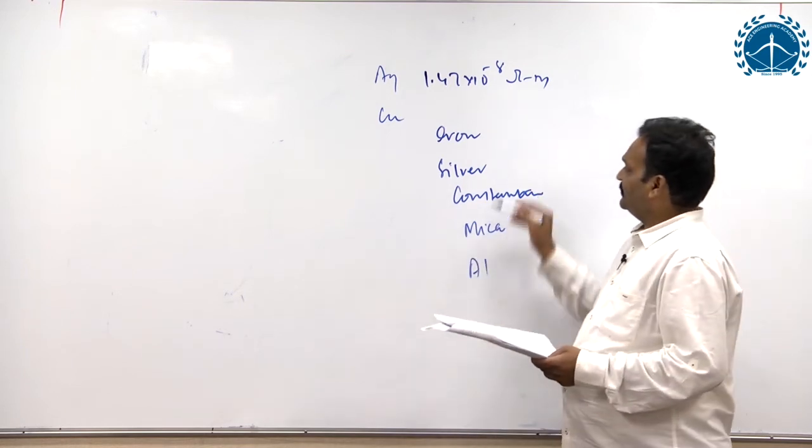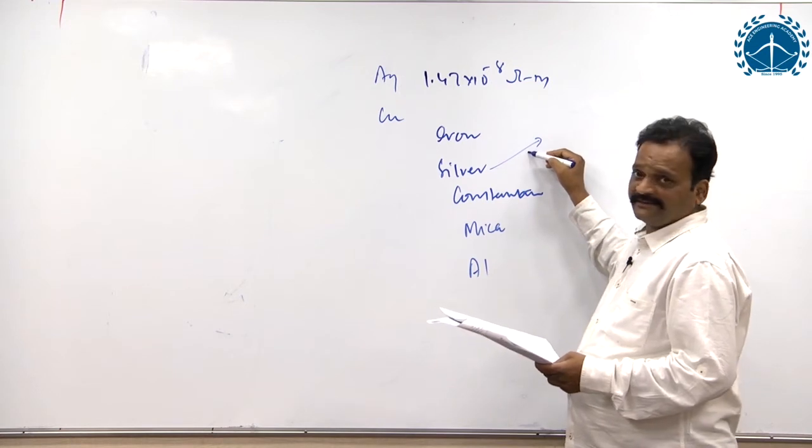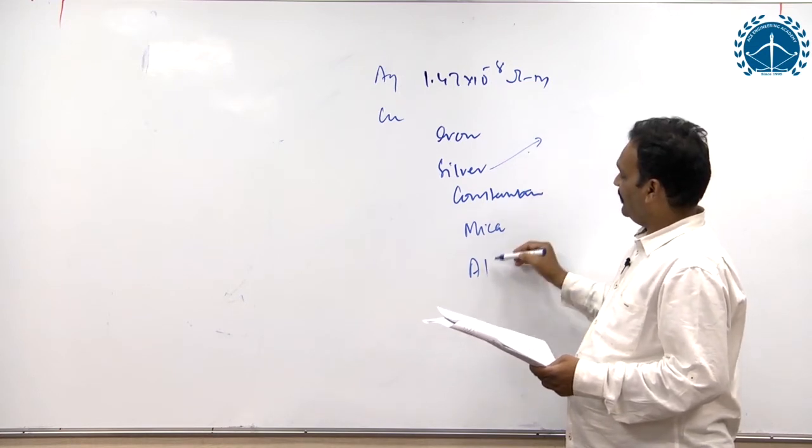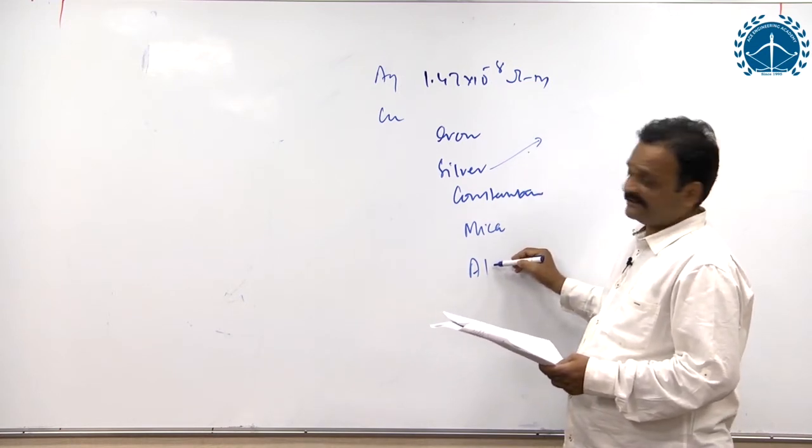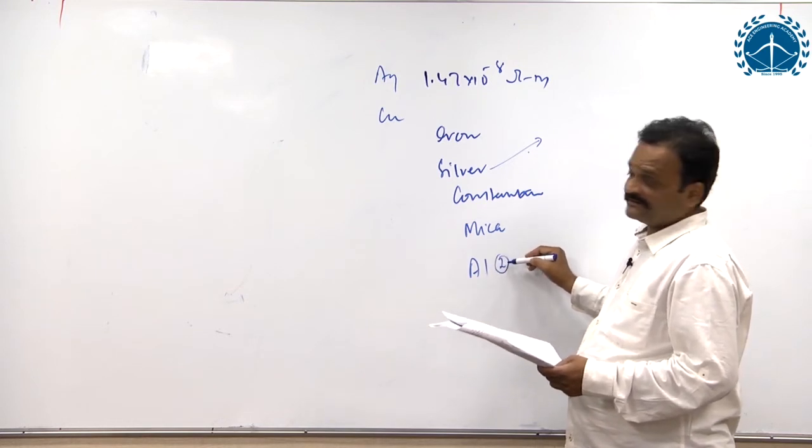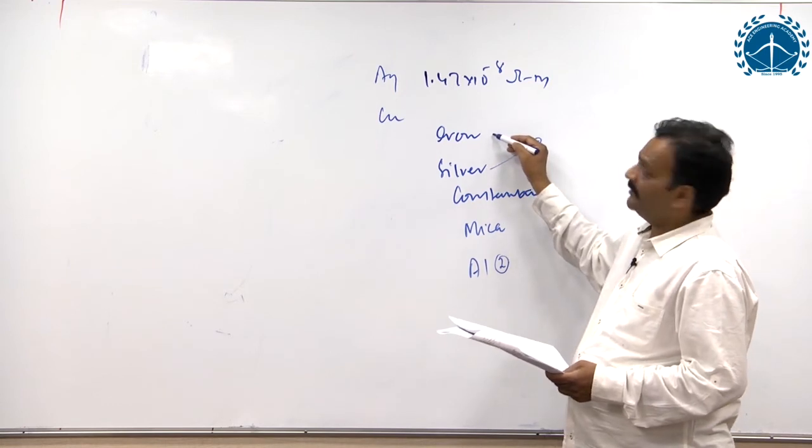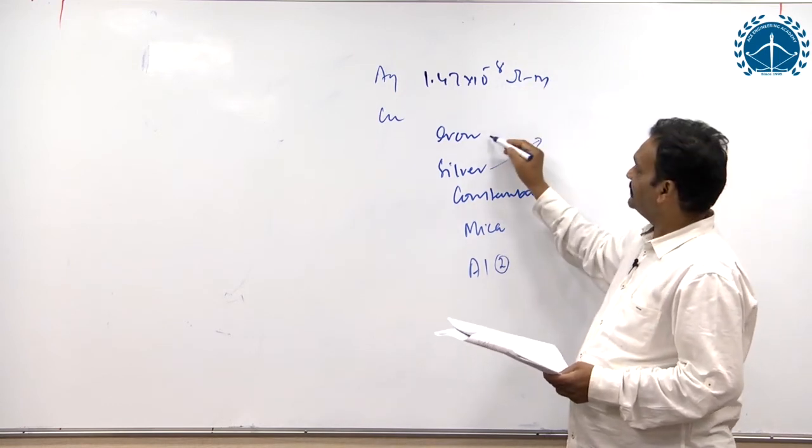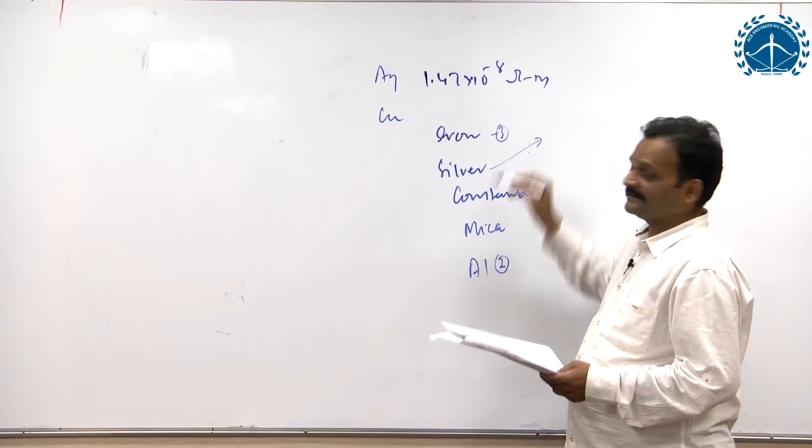As you know silver is the best conductor with lowest resistivity, next comes aluminium as the fourth best conductor. So the second in conductivity is aluminium, third is iron with around 8.18 into 10 to the power minus 8 ohm meters. Iron is third as far as conductivity is concerned.